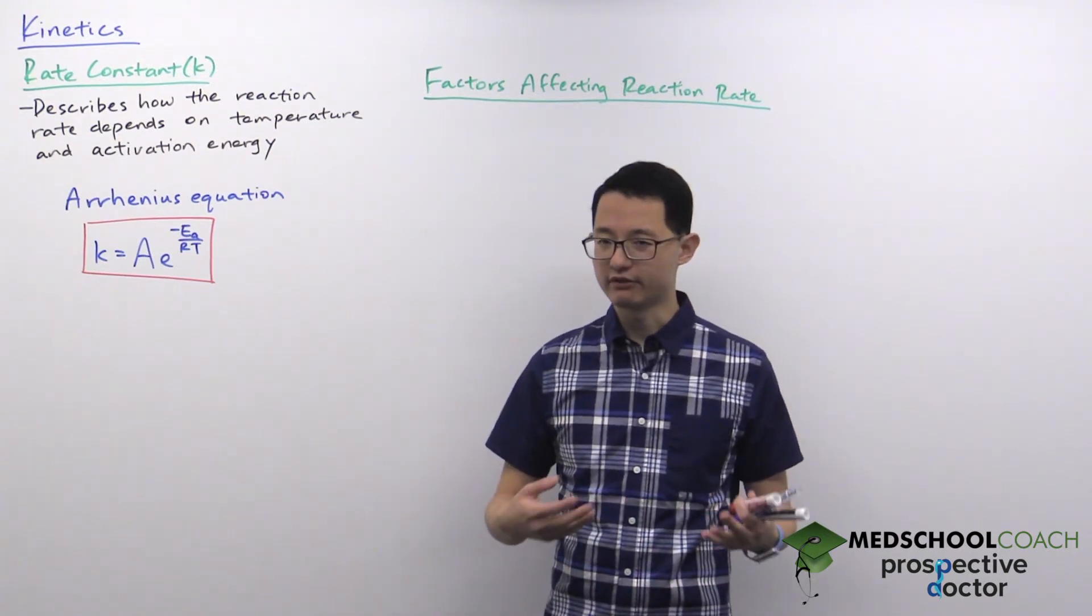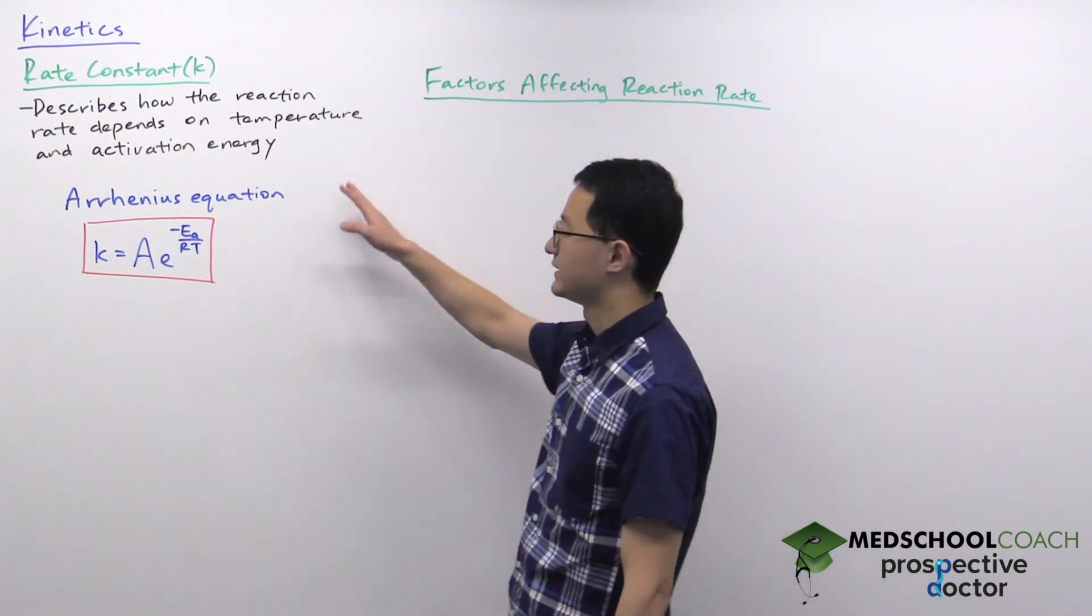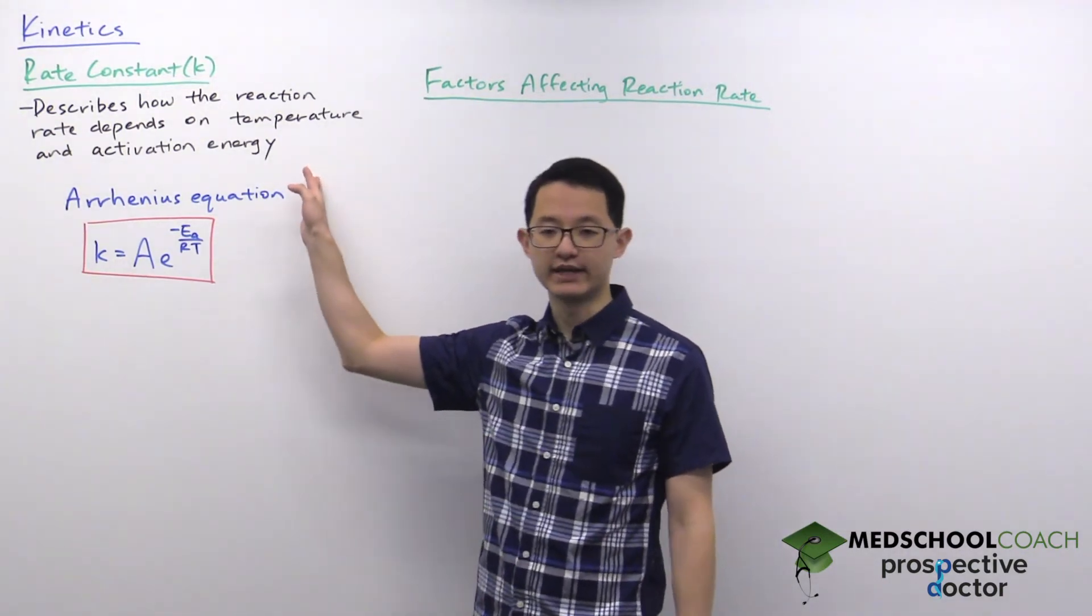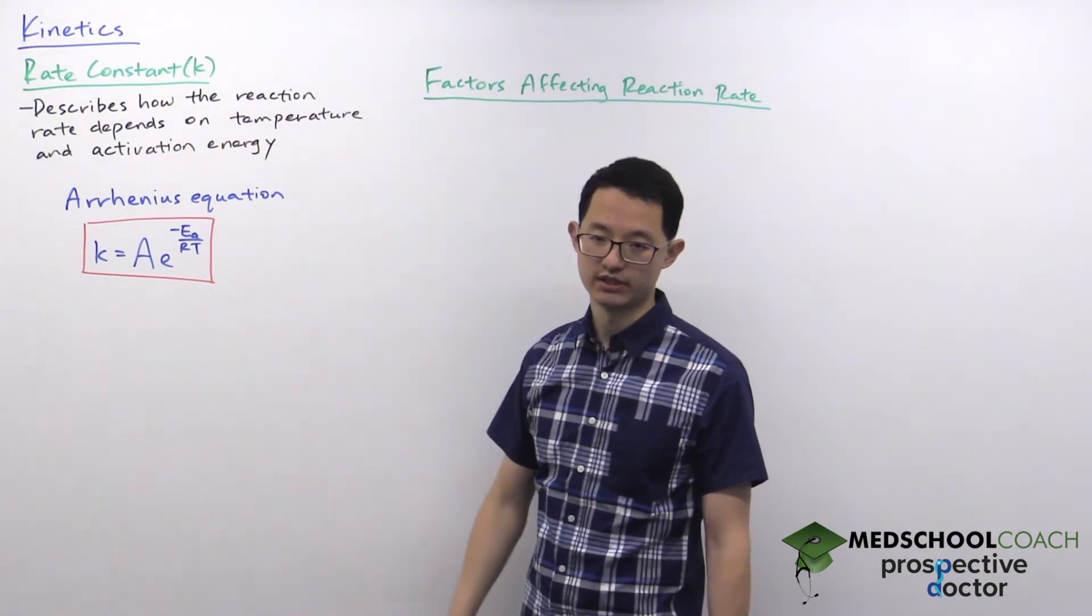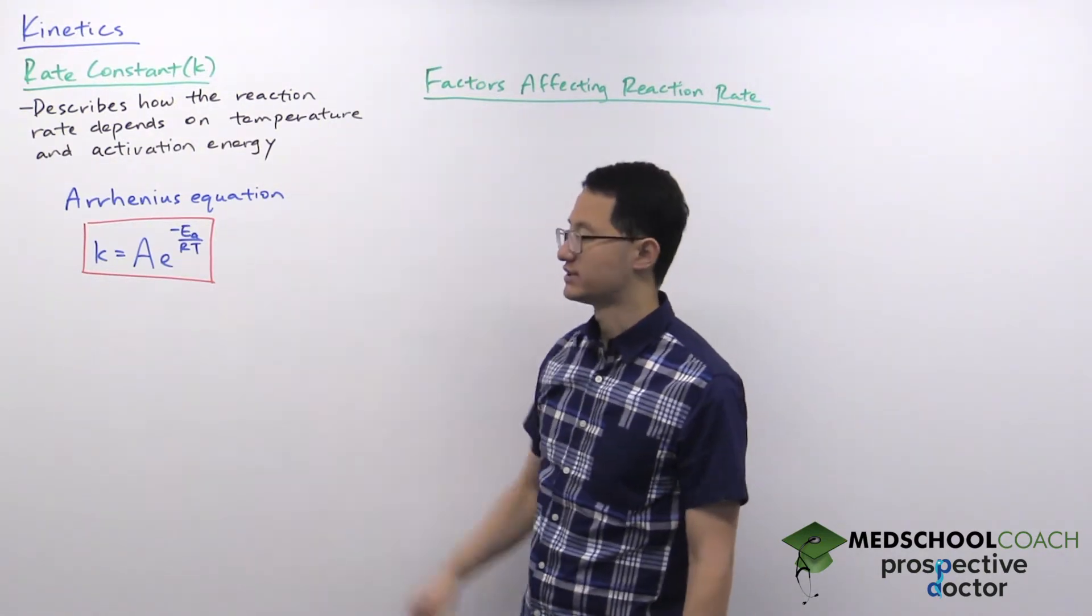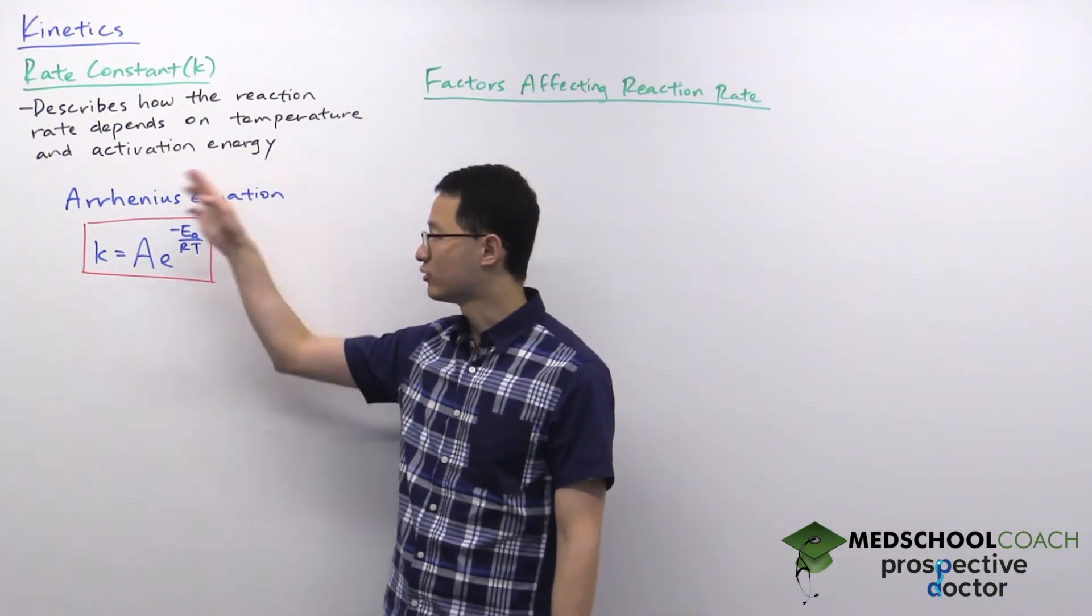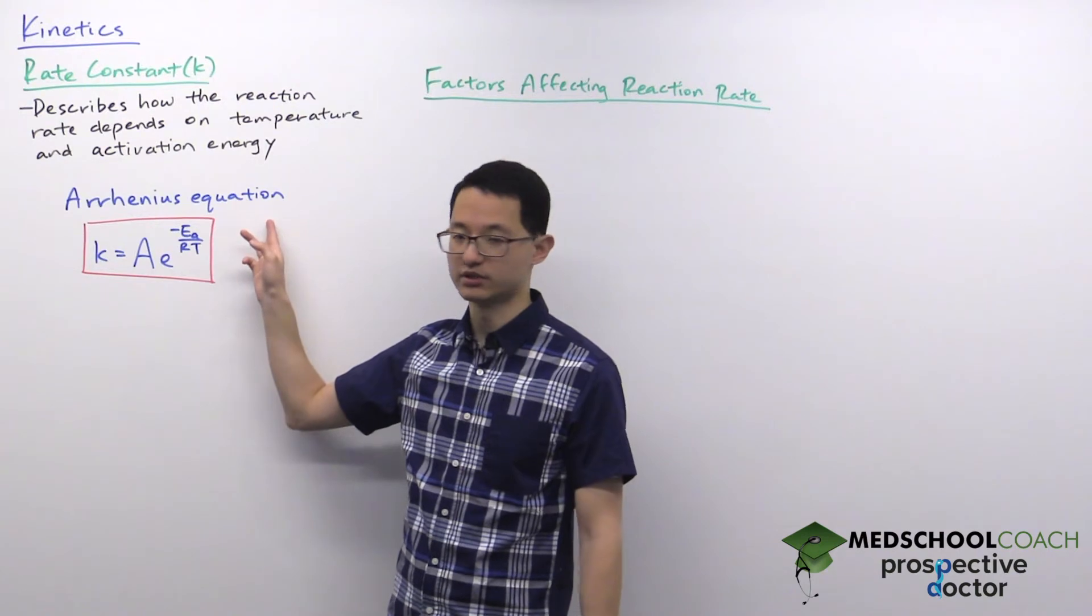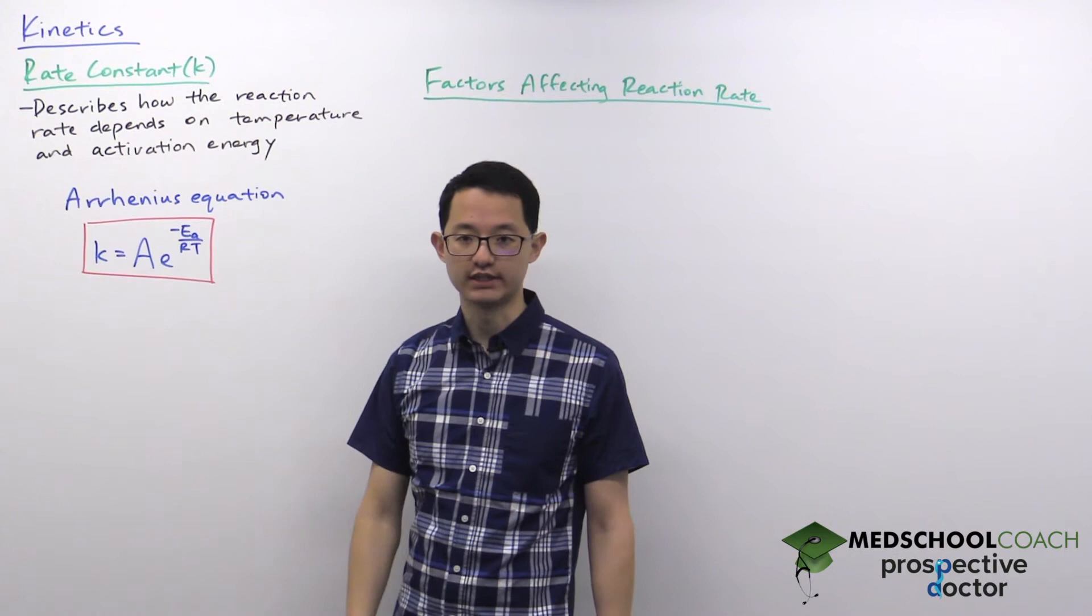But up to now we haven't really explained what exactly K is. So K describes how the reaction rate depends on temperature and activation energy. Even though it is a constant, there is an equation for the rate constant K, and the equation is the Arrhenius equation where K equals A times e to the negative Ea over RT.